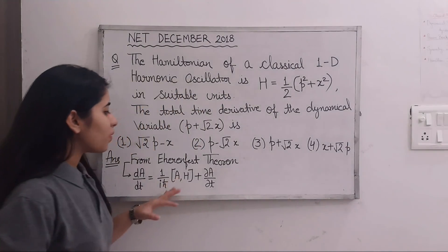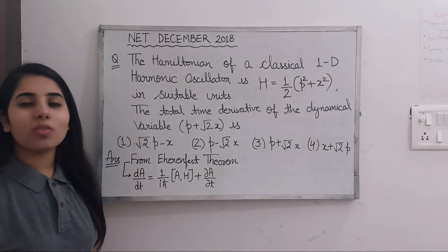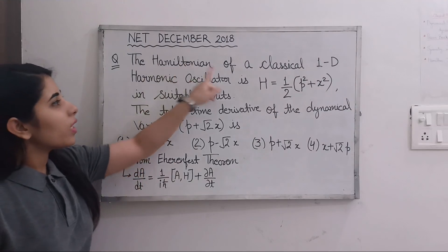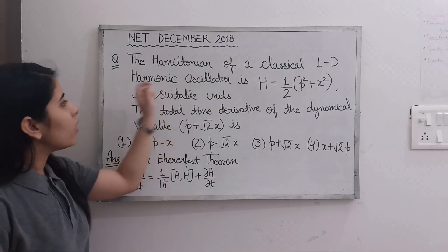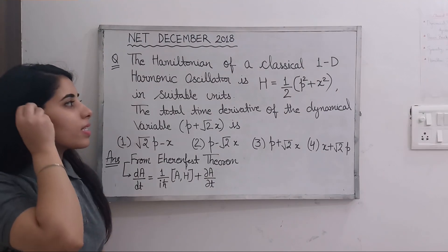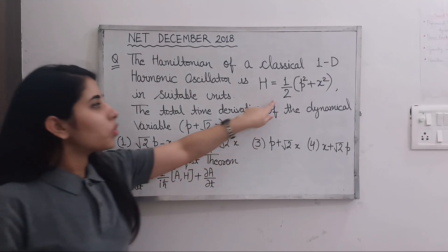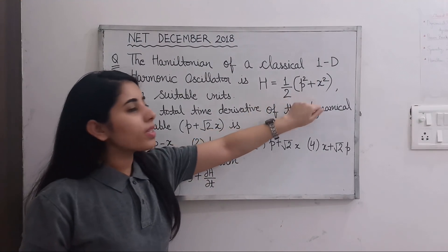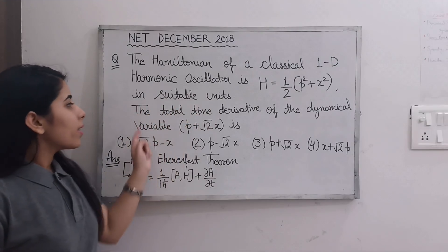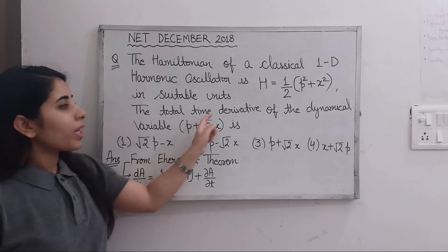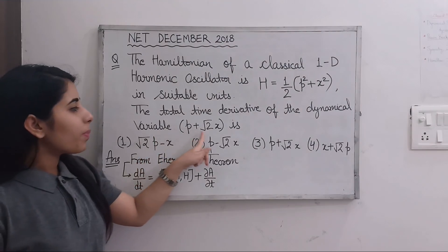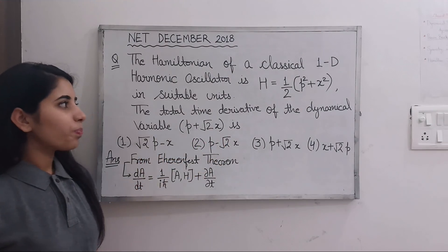Here is the question which has been asked in the NET December 2018 exam. The Hamiltonian of a classical one-dimensional harmonic oscillator is H = (1/2)(p² + x²) in suitable units. The total time derivative of the dynamical variable p + √2x is to be found.